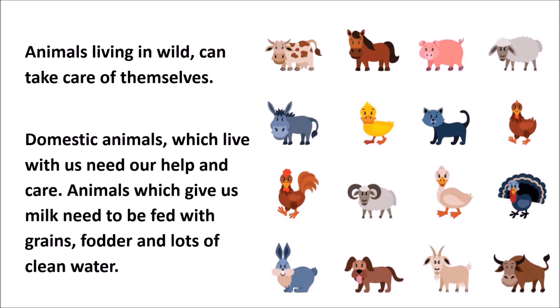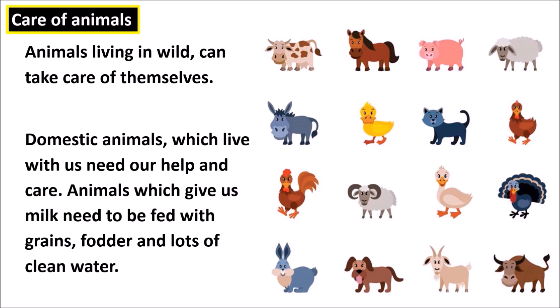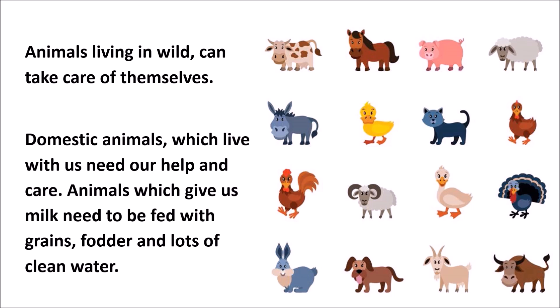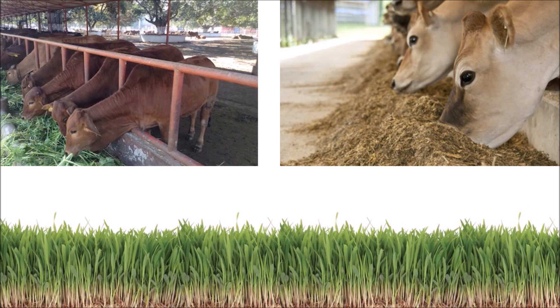Animals living in the wild can take care of themselves. Domestic animals which live with us need our help and care. Animals which give us milk need to be fed with grains, fodder, and lots of clean water.